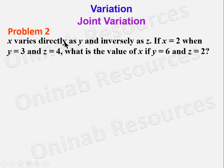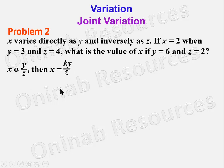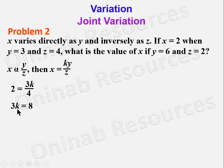We translate: x ∝ y/z, so x = ky/z. Substituting x = 2, y = 3, z = 4: 2 = 3k/4. Cross-multiplying gives 3k = 8, so k = 8/3.